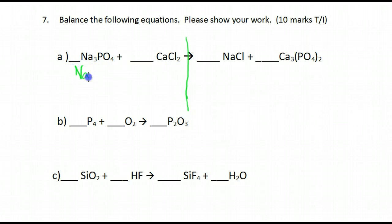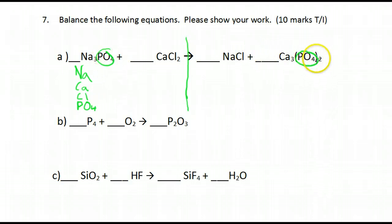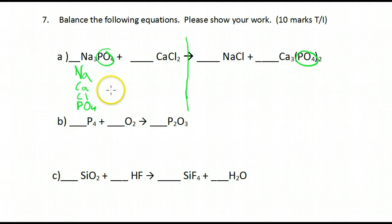I'm going to put down our different atoms: sodium, calcium, chlorine. I'm leaving phosphate to the last because if phosphate is on both sides of the equation you can keep it as a phosphate and just count it as one. However, if there's phosphate on one side and it breaks up into phosphorus and oxygen on the other side, you have to break it into separate P and separate O and count them individually.